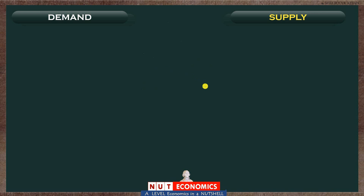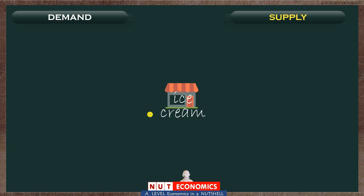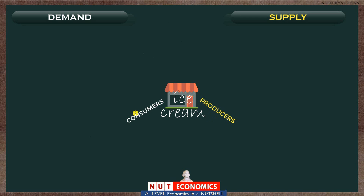Let me start by building up an imaginary scenario where we assume there is a market of ice cream. Through this imaginary market I'll use simple logic to build some simple numbers and explain all the ideas you need to know. First, remember how we define a market: a market is any place where consumers and producers of a product come together. That definition can earn you a couple of marks in a relevant essay question. These producers will decide how many ice creams they want to produce, and these consumers will decide how many ice creams they want to buy.